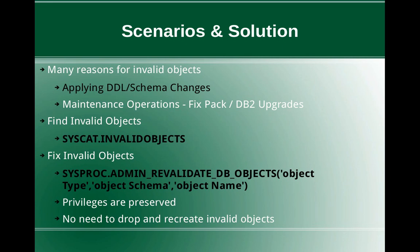How will I fix the invalid objects? There is a procedure, sysproc.admin.revalidateDB objects, which takes three arguments: object type, object schema, and object name. This gives a lot of flexibility to revalidate DB objects. You can pass null arguments to all three — in that case it will revalidate all the objects inside the database. If you pass only the schema name, then it will revalidate only the objects available under that schema.